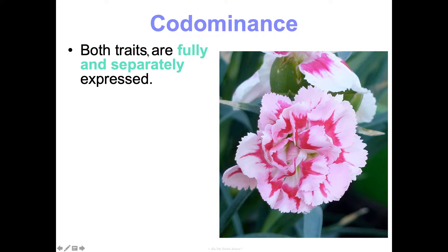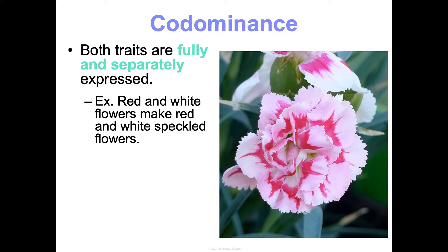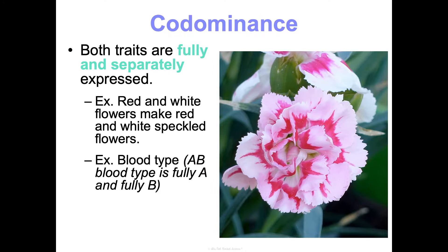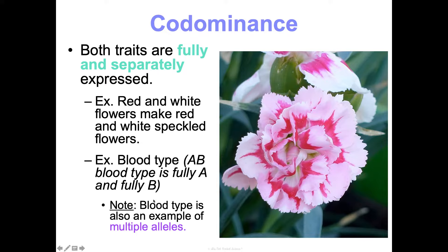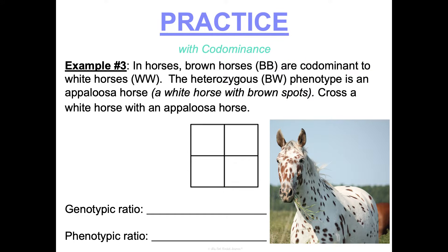The next exception to Mendel's laws is codominance. The prefix 'co' means together, so this is where both traits are fully and separately expressed together. For example, red and white flowers would make red and white speckled flowers. Another example is blood type — type AB blood is fully A and fully B, with both equally dominant. Blood type is also an example of multiple alleles, so we'll discuss it more in depth.